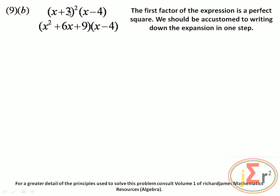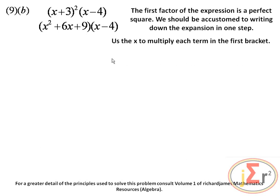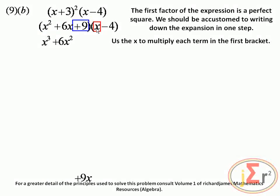The square of x, the square of 3, and the middle term 2(x)(3) equals 6x — that is the one we generally forget. So (x plus 3) squared is x squared plus 6x plus 9, then multiply by (x minus 4). Use x to multiply each term in the first bracket: x times x squared is x cubed, x times 6x is 6x squared, and 9 times x is 9x.